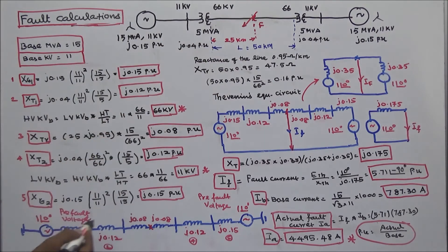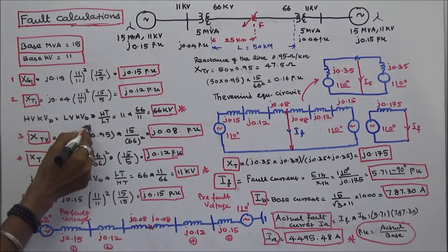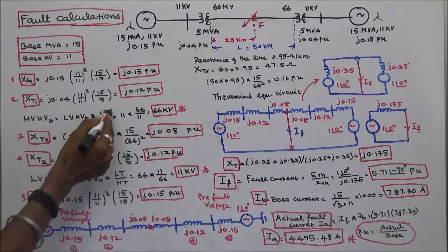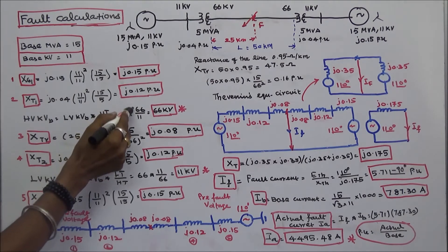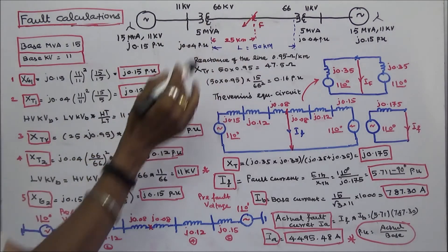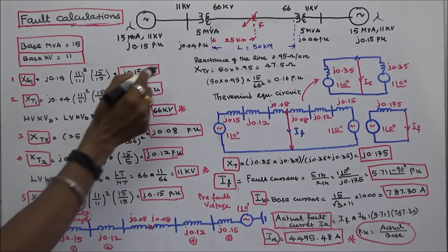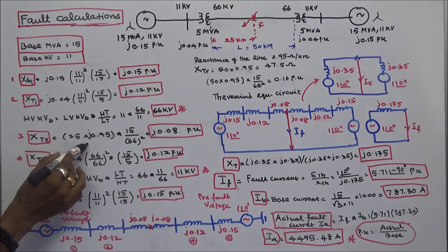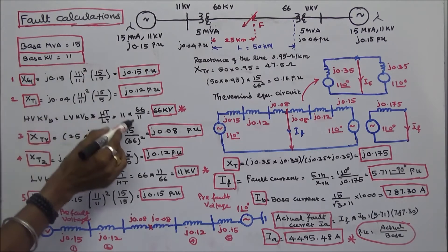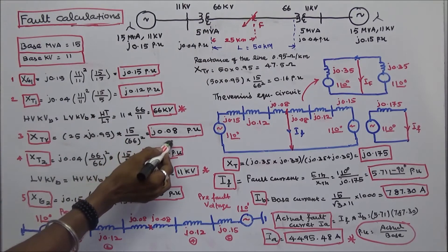Next, we calculate the high-voltage KV base. High-voltage KV base equals low-voltage KV base (11) × (HT/LT), where HT is 66 and LT is 11. So 11 × (66/11) equals 66 KV — that is the transmission voltage. For the transmission line, the reactance up to 25 km is: 25 × J.95 × 15 ÷ 66² = J.08 per unit.